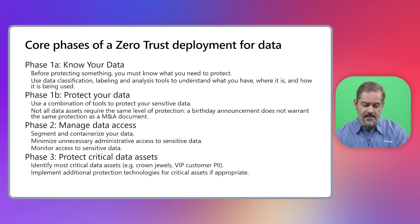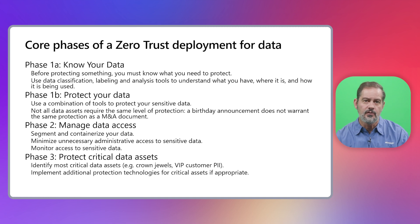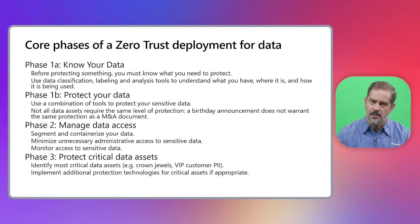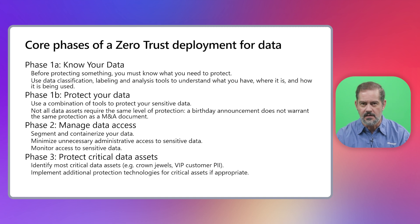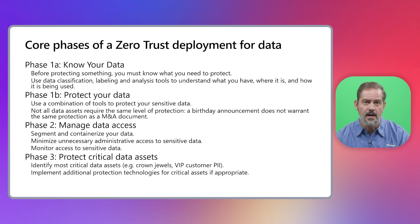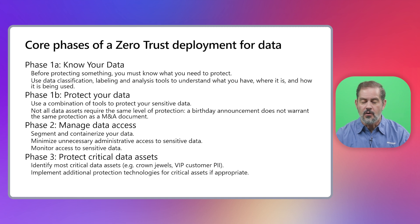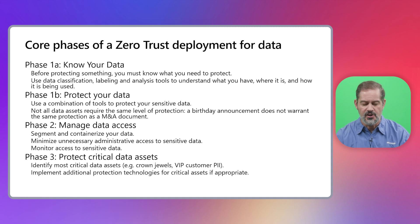The second part of the first phase is to protect your data. You will establish controls over each kind of data according to the classes defined — for example, customer PII cannot be accessed by users outside of certain departments, or cannot be sent outside the organization except to specific companies. You can also establish boundaries for intellectual property so it doesn't leave the R&D department, and implement controls preventing unnecessary printing, copying, or sharing of specific data.